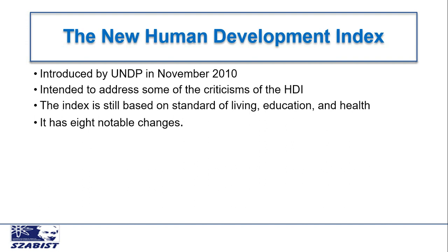In order to remove those criticisms, some amendments and changes were made in the HDI, and the new method for measuring economic development is stated as New Human Development Index. It was introduced by UNDP in 2010, intended to address some of the criticisms of the HDI. The basic purpose of introducing the new HDI is to address those issues which were raised on the old HDI.